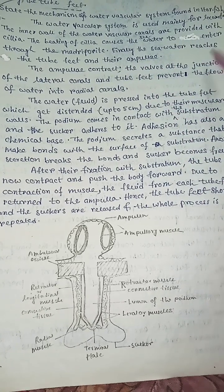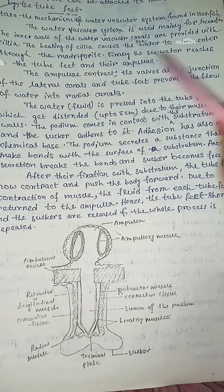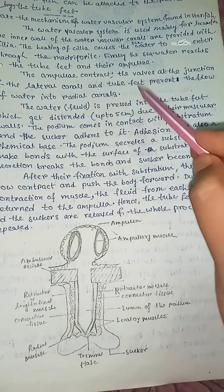Finally, the seawater reaches the tube feet and their ampullae. The ampullae contract. The valves at the junction of the lateral canals and tube feet prevent the flow of water into radial canals.